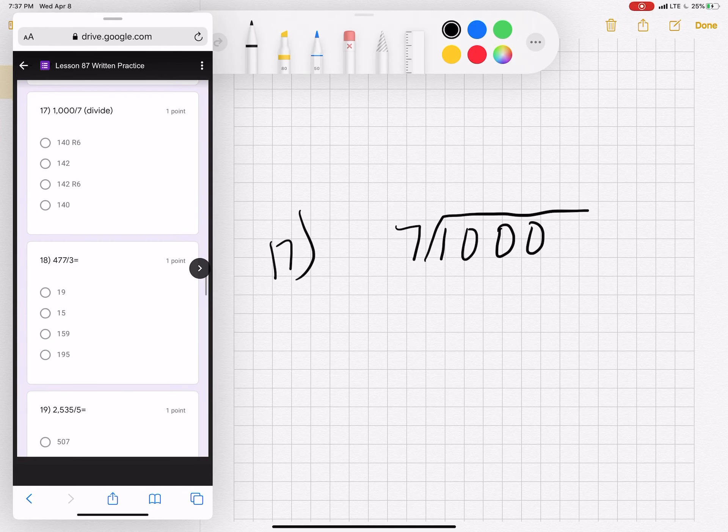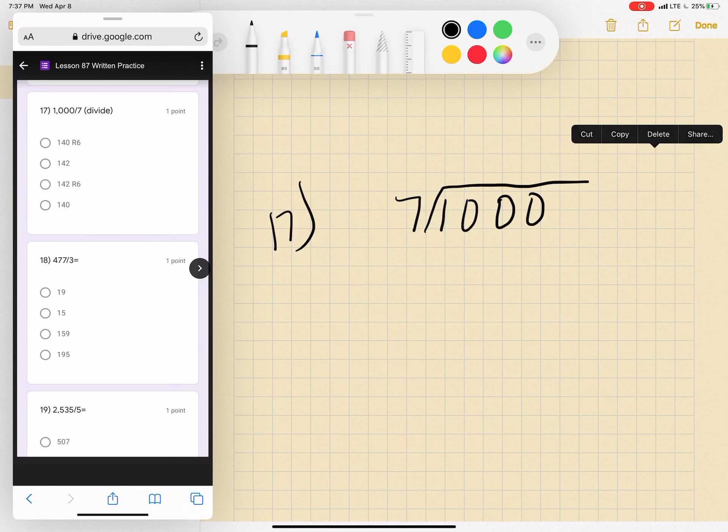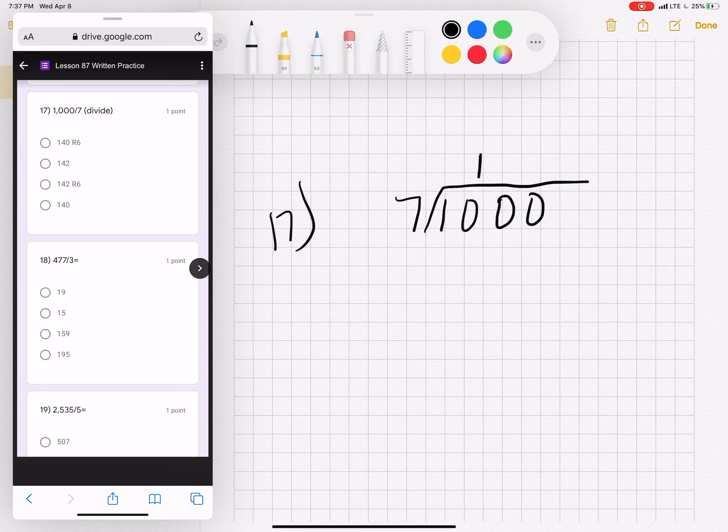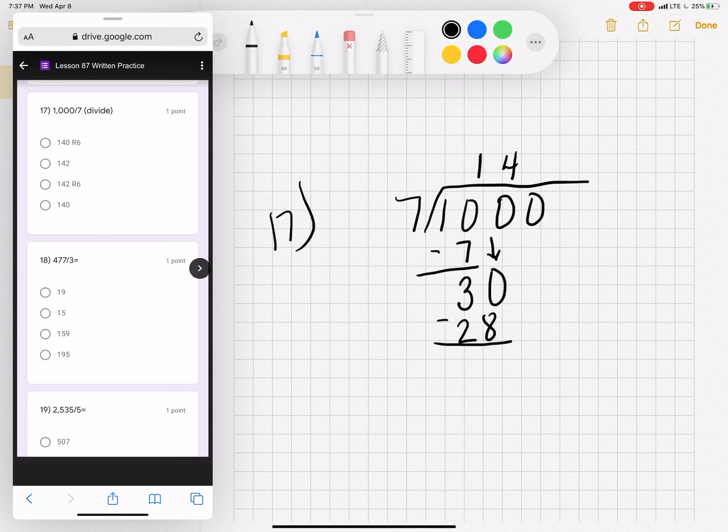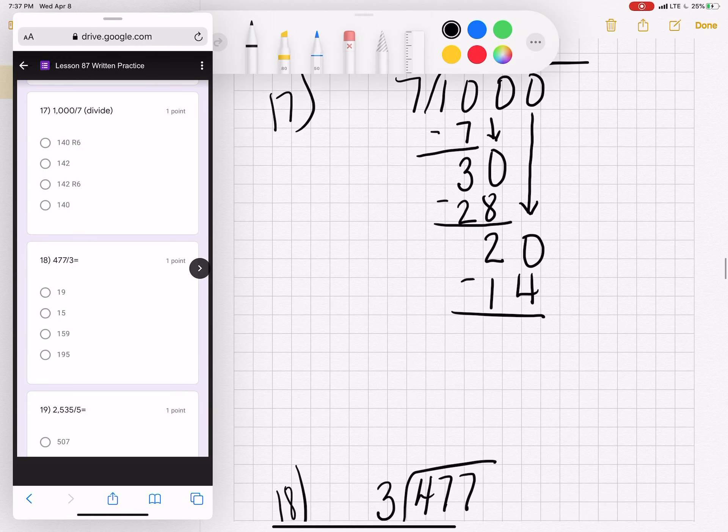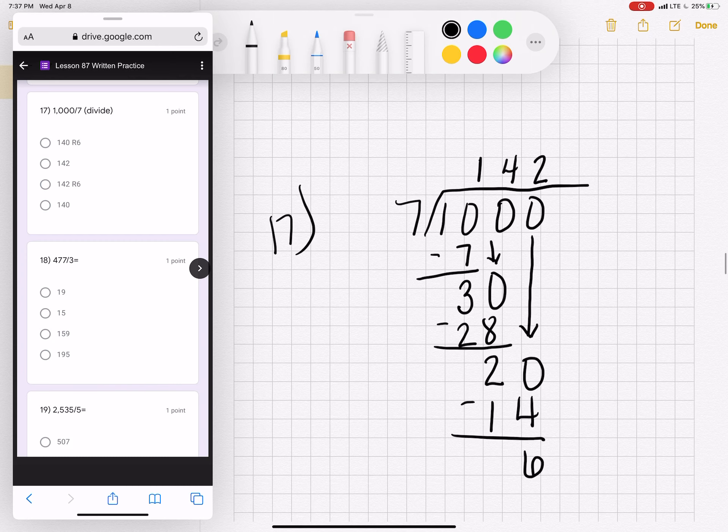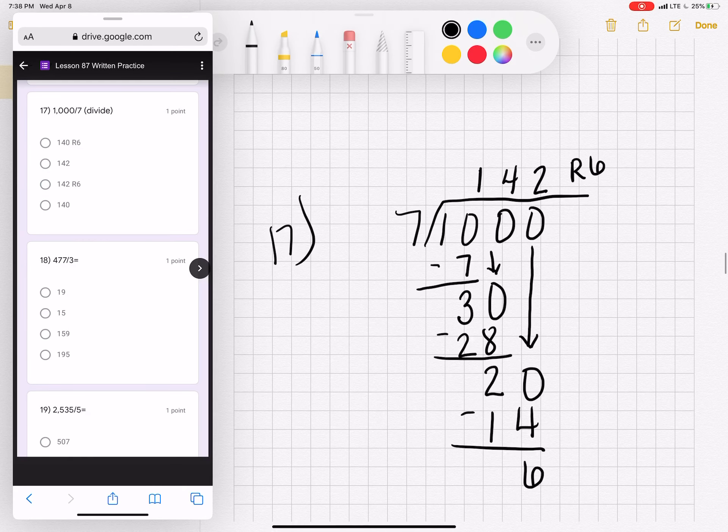Number seventeen. One thousand divided by seven. Seven will not go into one, but it will go into ten. One times seven is seven. Ten minus seven is three. Bring down your zero. Seven goes into thirty four times. Four times seven is twenty-eight. Twenty-eight is two less than thirty. Bring down this zero. Twenty-one is seven times three, but that is too big, so we know we can only go in two times. Twenty minus fourteen is six. So we have a remainder of six here. One hundred forty-two, remainder six.